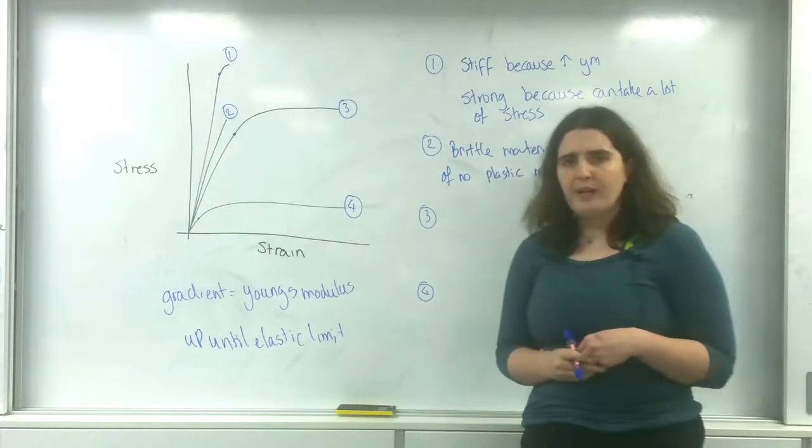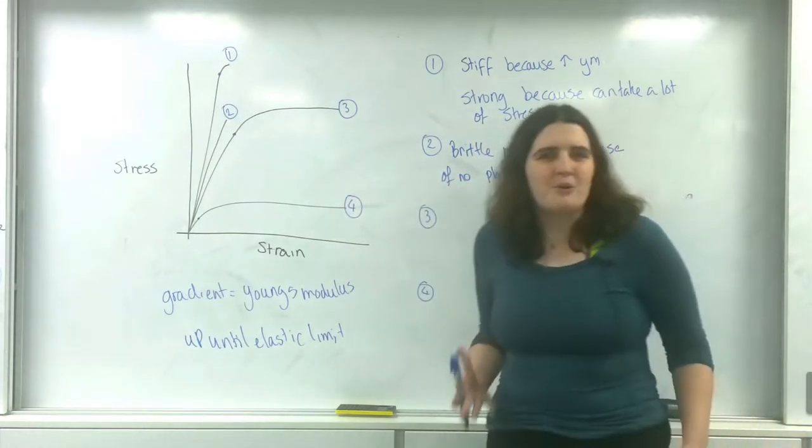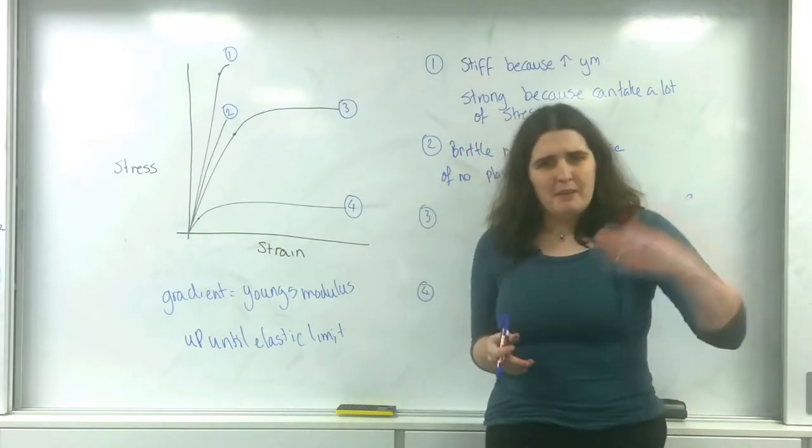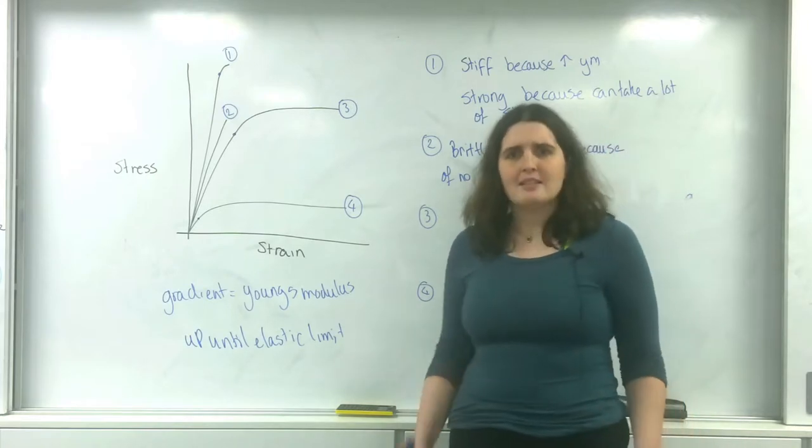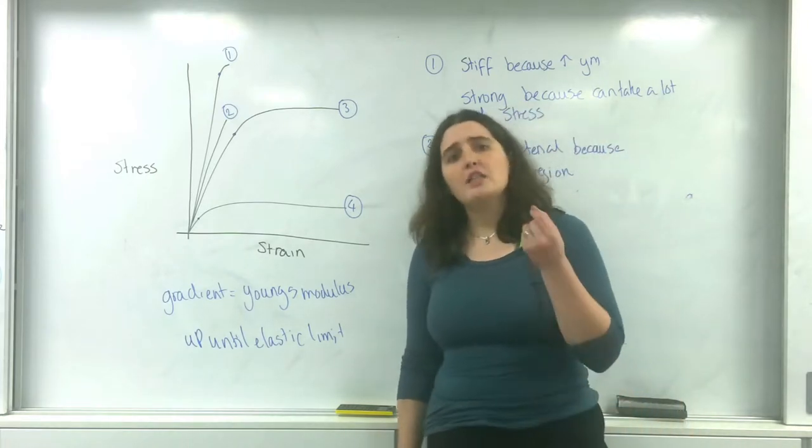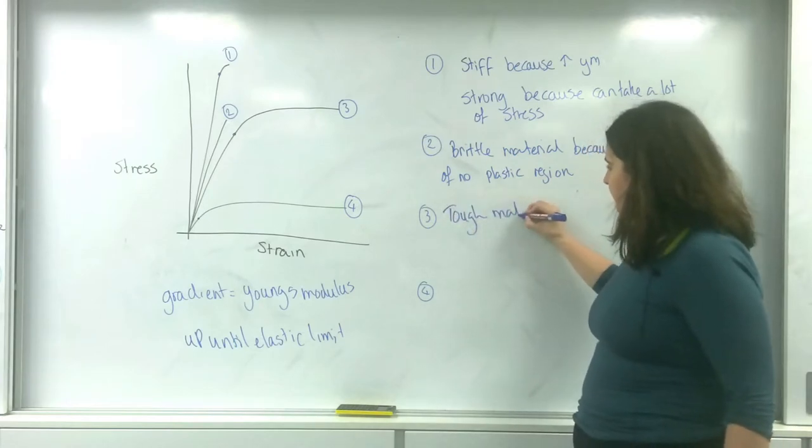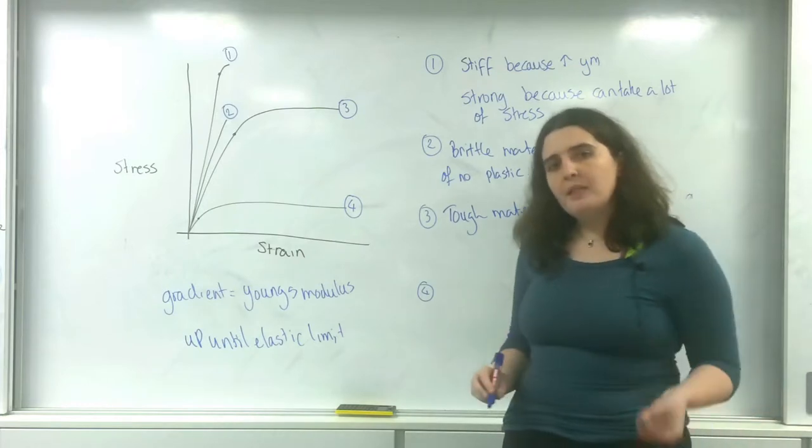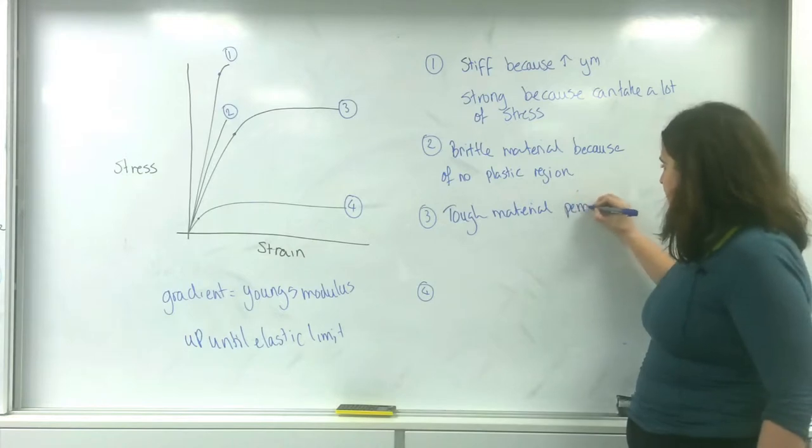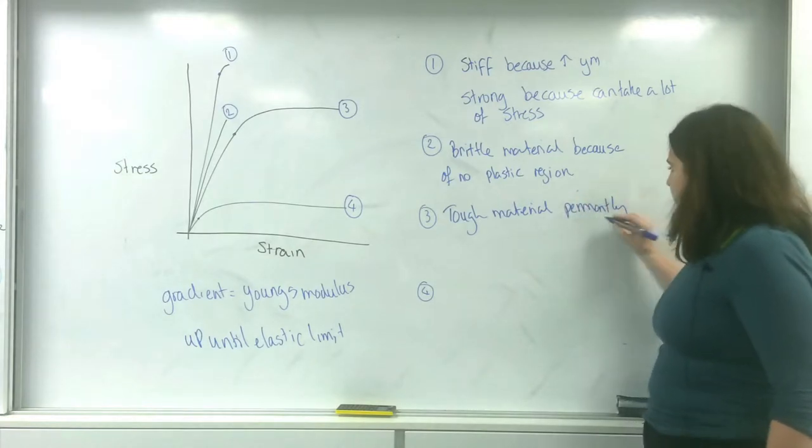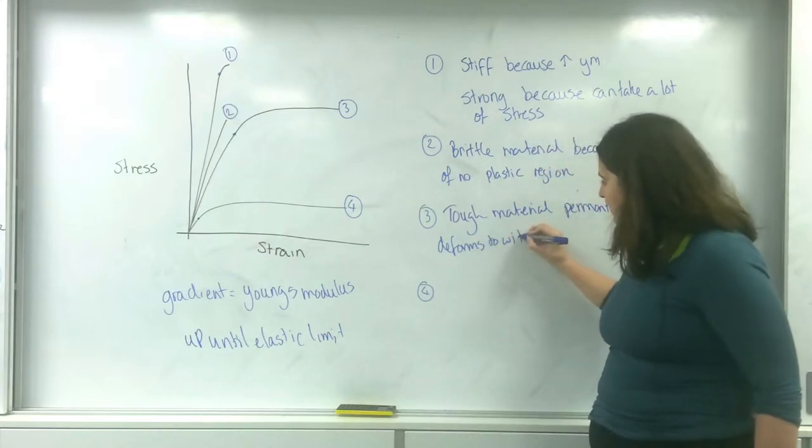Now, material three has a very large plastic region. It actually lasts a really long time. So this material, when it gets to its peak stress, it just keeps changing and changing to cope with that stress. It is what we call a tough material because it permanently deforms to absorb energy, so it permanently deforms to withstand stress.